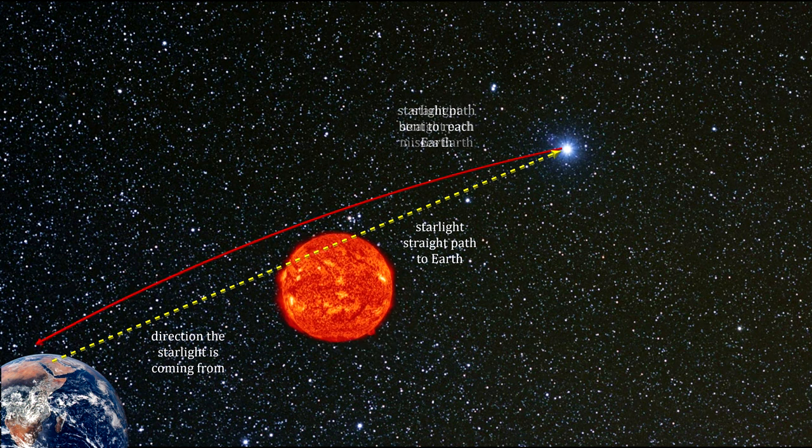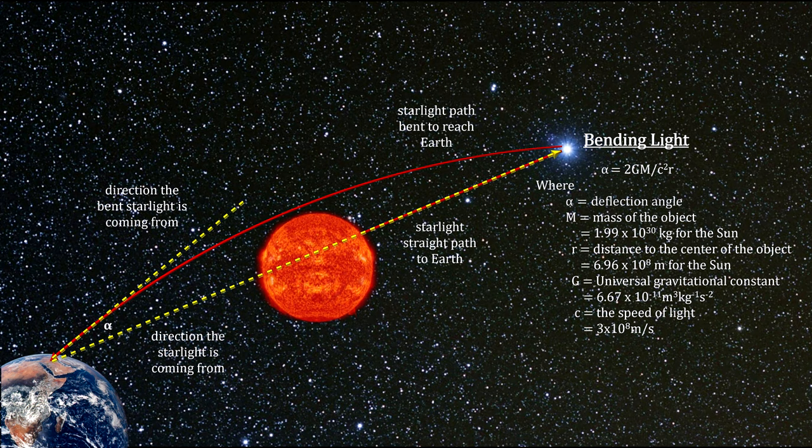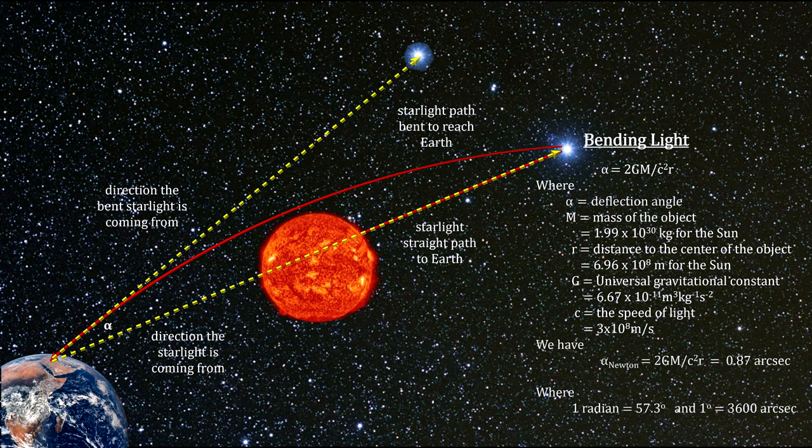But the two theories predict different amounts of bending for the same mass and distance measurements. For light passing near the surface of the Sun,